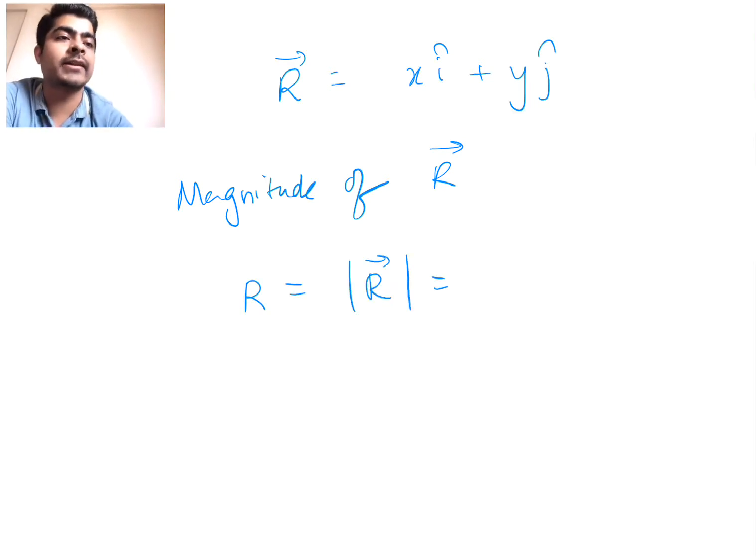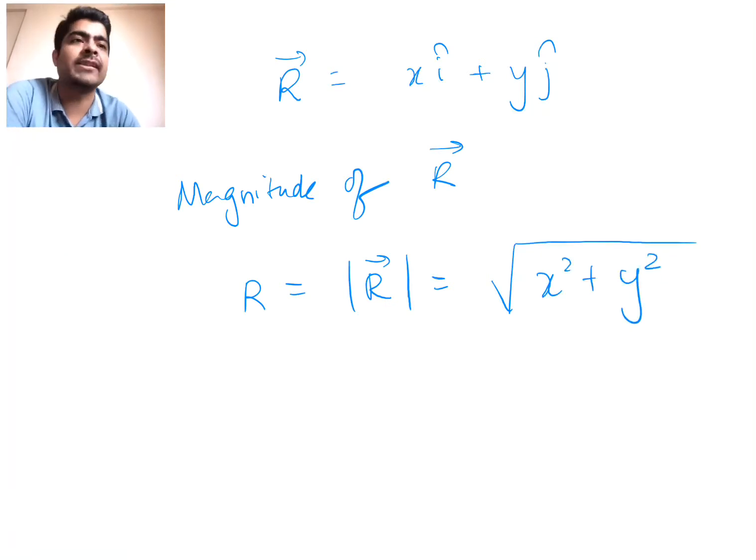So if I have in general some r vector equals x i cap plus y j cap, then I can write magnitude of this r vector as r, or simply magnitude of r vector, that is equal to root of x squared plus y squared. That's it, very easy. So this is the way of writing magnitude of a vector.